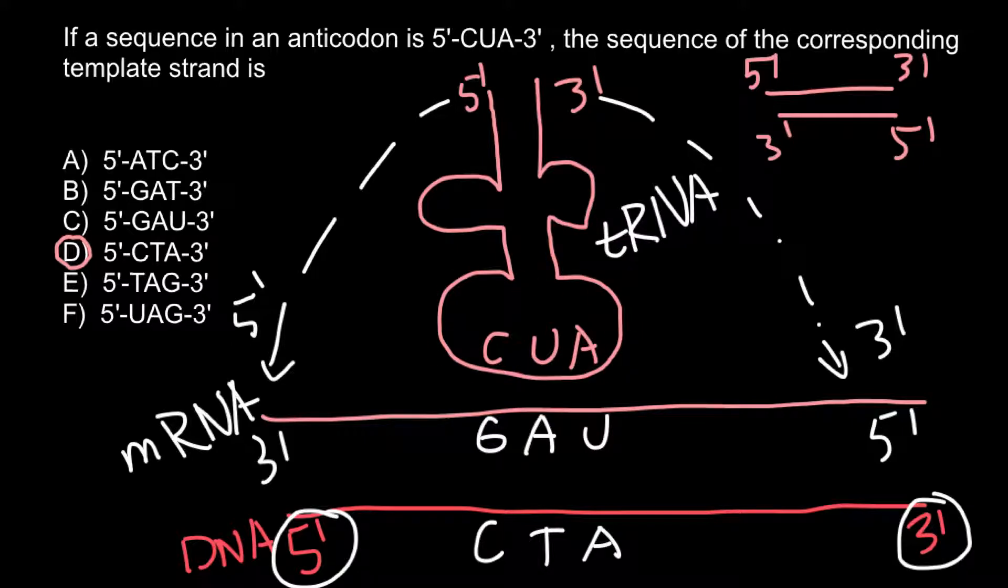Just one last note: we call this sequence in the anticodon loop of the tRNA the anticodon. The corresponding sequence in the messenger RNA we call the codon, and the corresponding sequence of the DNA template strand we also call the codon.